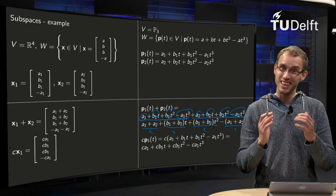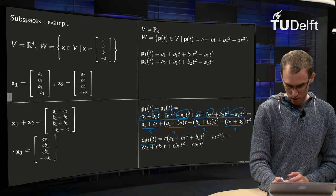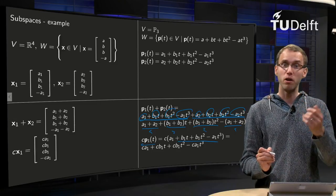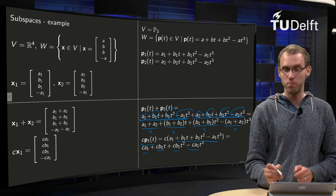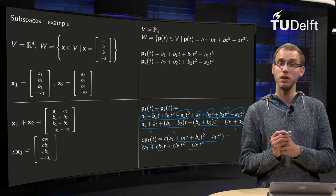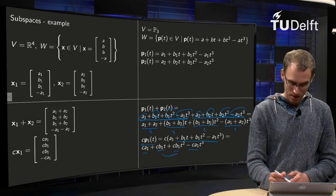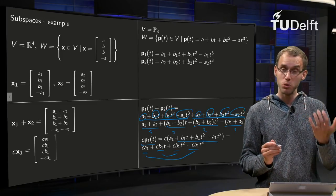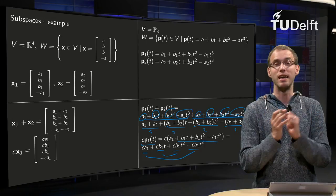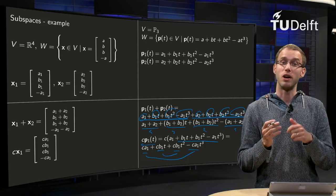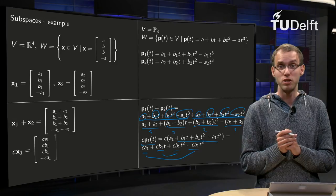Now the other property: a scalar multiple of a polynomial. Taking C times P1, we multiply all coefficients by C, giving C·A1 + C·B1·t + C·B1·t² - C·A1·t³. Again, the t and t² coefficients are the same, and the constant and t³ coefficients are the same up to sign. So a scalar multiple of a polynomial in W is also in W, meaning the second condition is satisfied and W is a subspace of V.